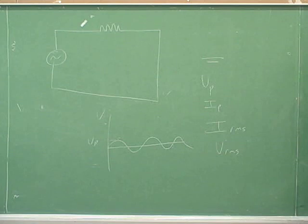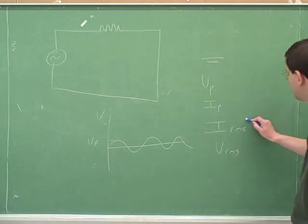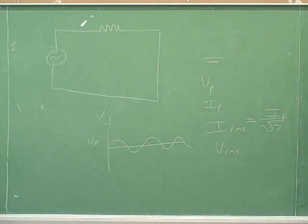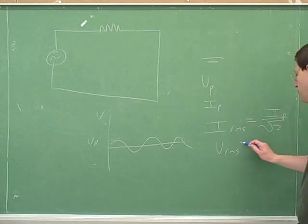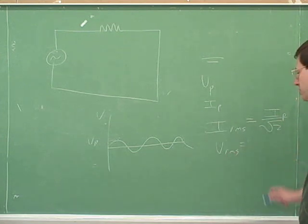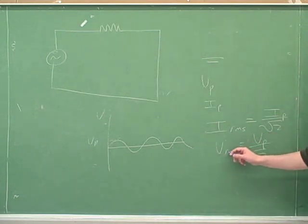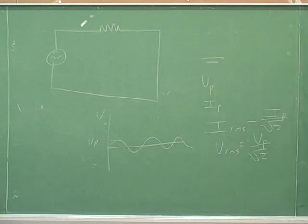One reason the root mean squared is convenient is because it's very easy to calculate if you know the peak. If you know the peak current, how would you find the root mean squared current? You divide by root two. This is a very simple formula — one of the advantages of focusing on root mean squared. There's a very simple relationship between peak current and root mean squared current. Similarly, for root mean squared voltage, you divide the peak voltage by root two. If you know the peak, you can always divide by root two to find the root mean squared. We'll just memorize that as a formula.